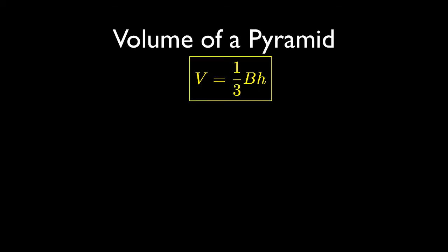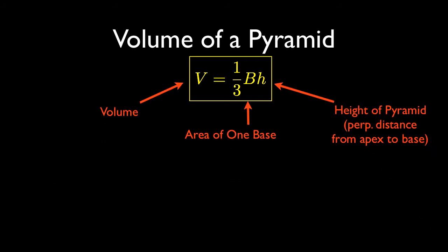For pyramids and cones, the volume is just 1/3 of their related prisms and cylinders. So a pyramid is 1/3 times the area of one base times the height of the pyramid.